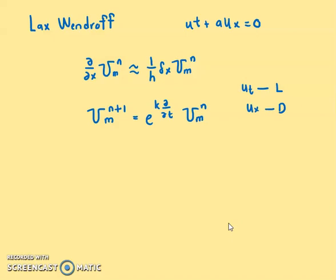So what we do here now, this thing, I can write that as exponent k. Now what is ut? ut equals to negative a ux. So I have k negative a ux. Now this negative a ux, I can also write this as exponent negative k a, which is partial over partial x. This whole thing here, you need to remember this as u_m^n.